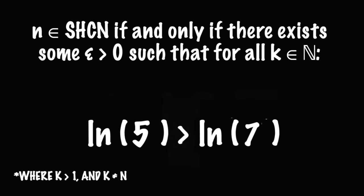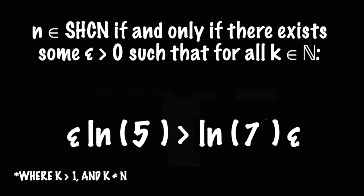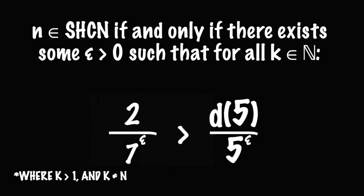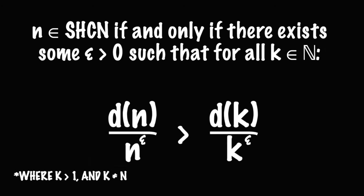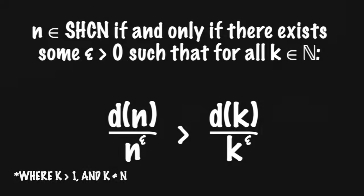Which is not true. Since we let epsilon just equal anything that we wanted so long as it was greater than 0, that means that we have just shown that for every single epsilon that you could possibly choose, there is a number k that makes this inequality false. Thus proving that 7 is not an SHCN. And that is how the definition works.